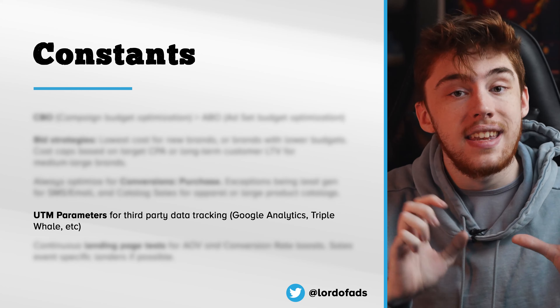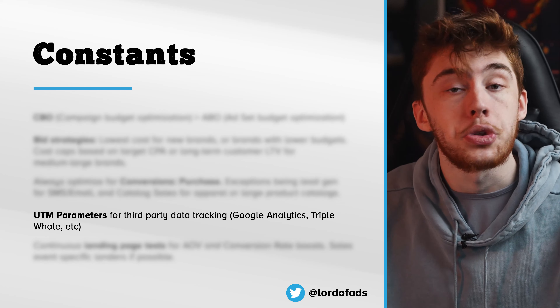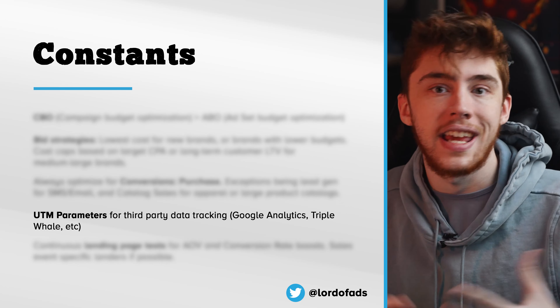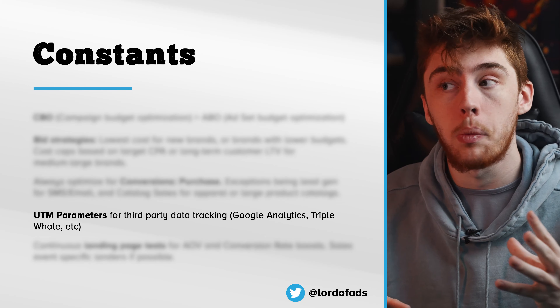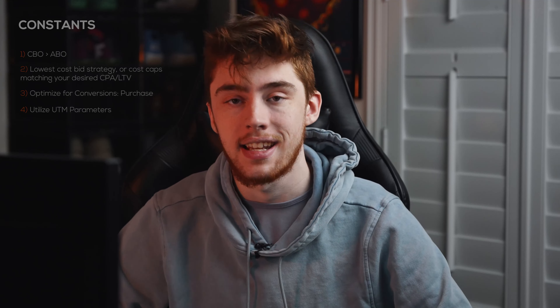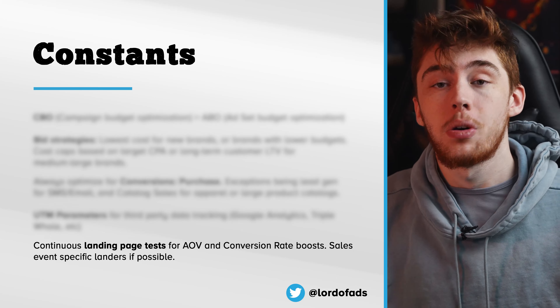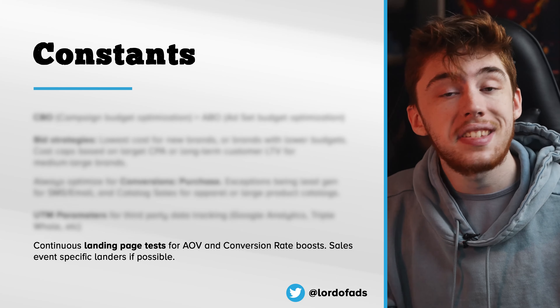We want to make sure that we're using UTM parameters inside the ad settings at all times. This allows us to send data to third-party tracking software like Google Analytics and Triple Whale. It comes in handy when we're trying to figure out what percentage of data loss we're seeing in the Facebook ad account — how many purchases, add to carts, or clicks to a website are not showing within standard reporting. We use Google Analytics to cross-reference the data by setting up UTM parameters within the ad setting.